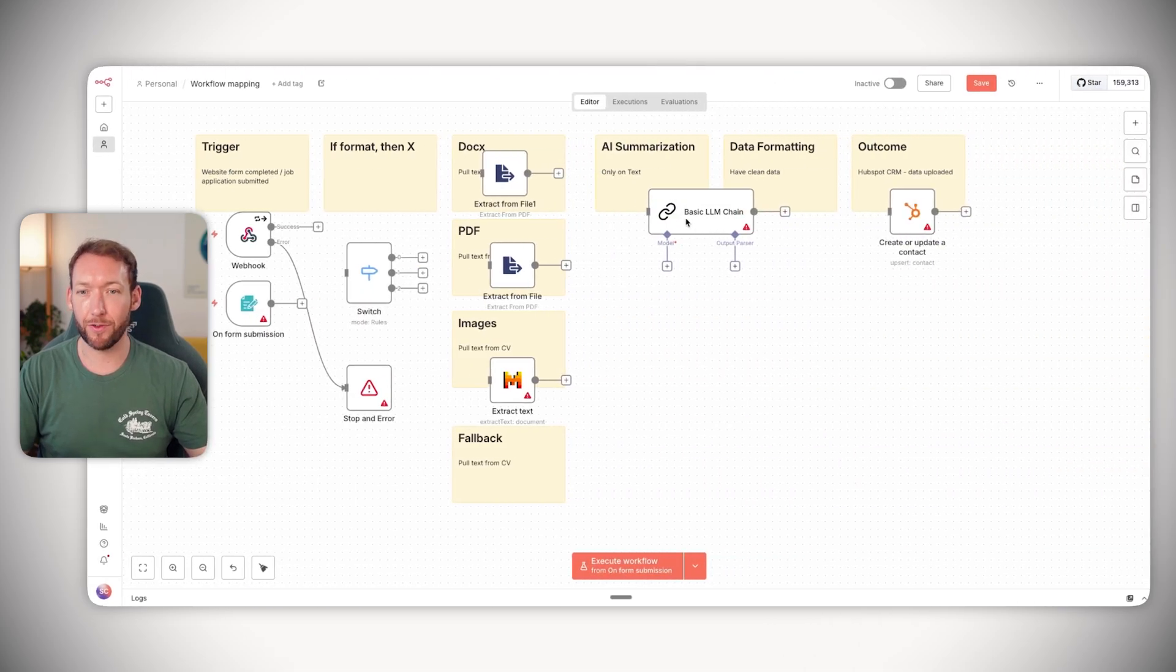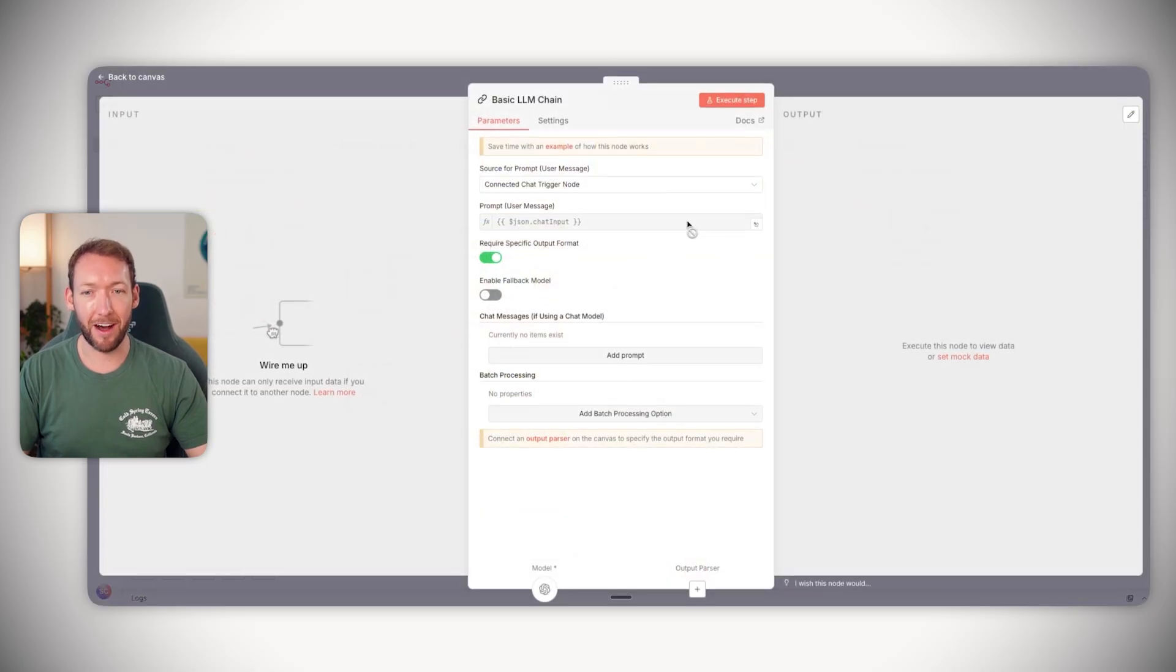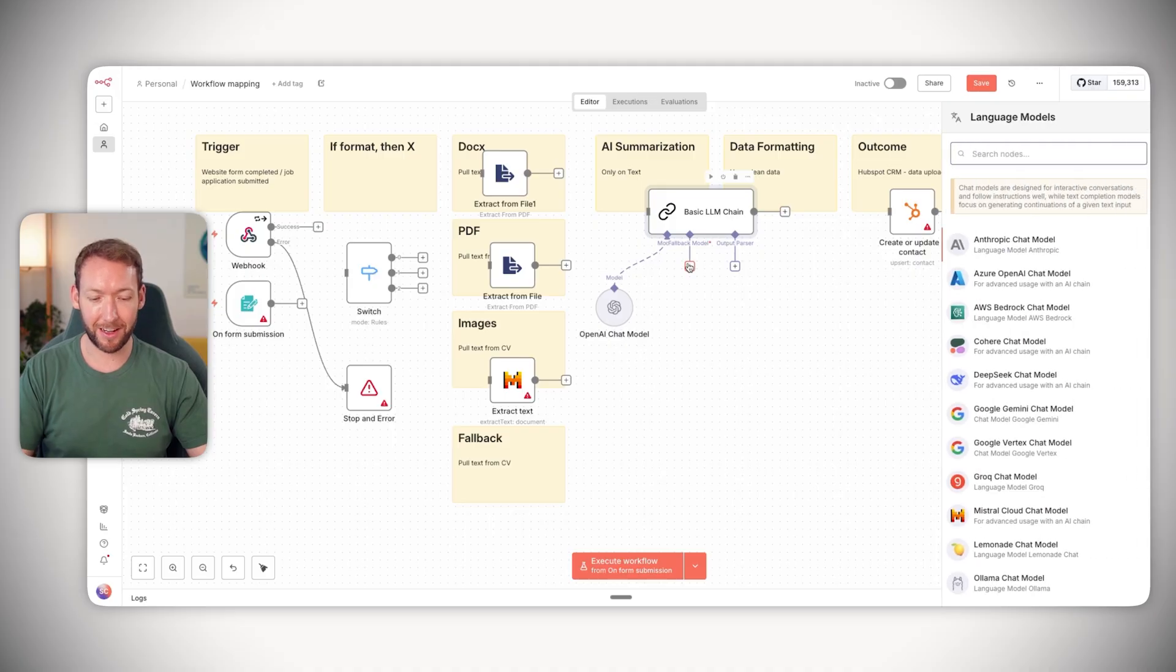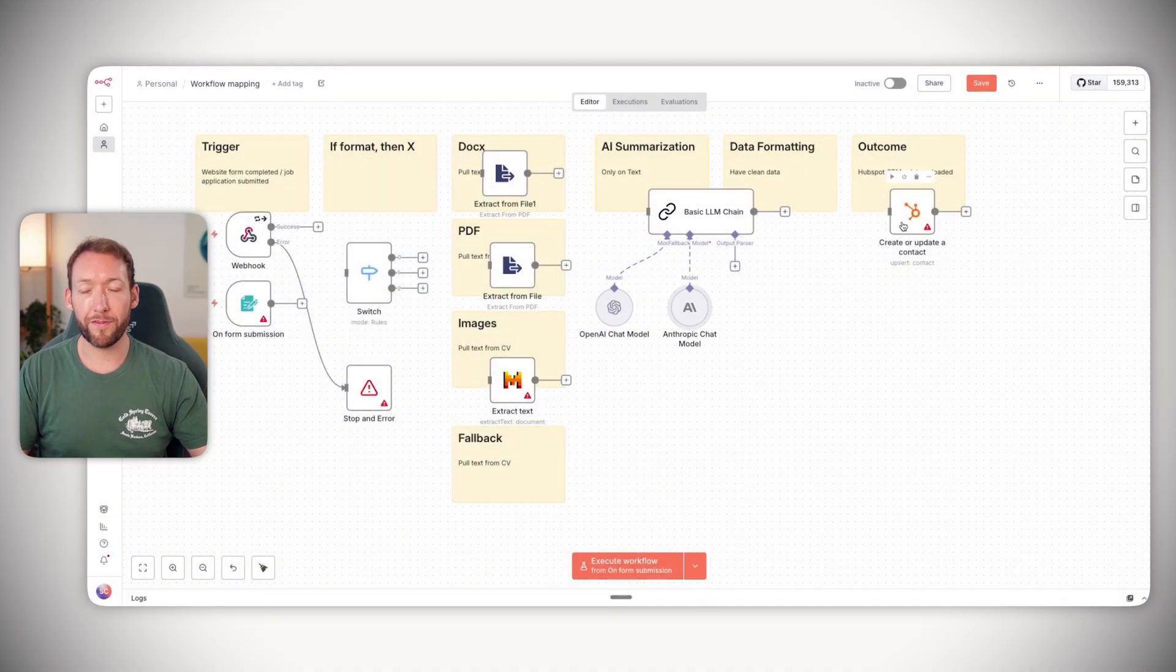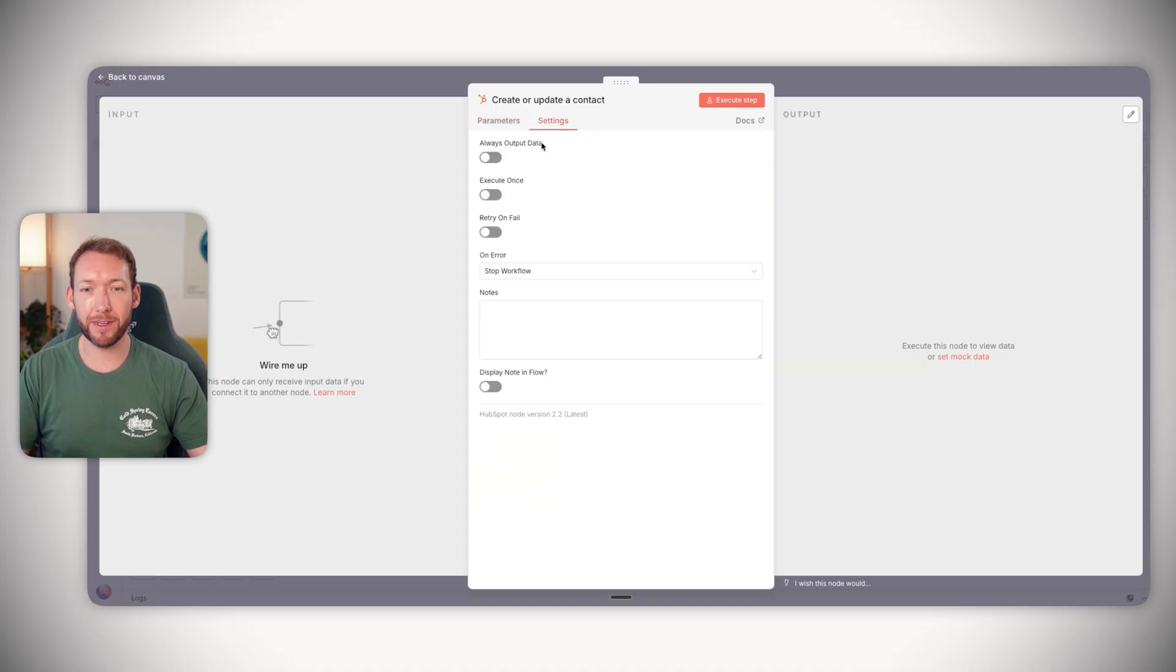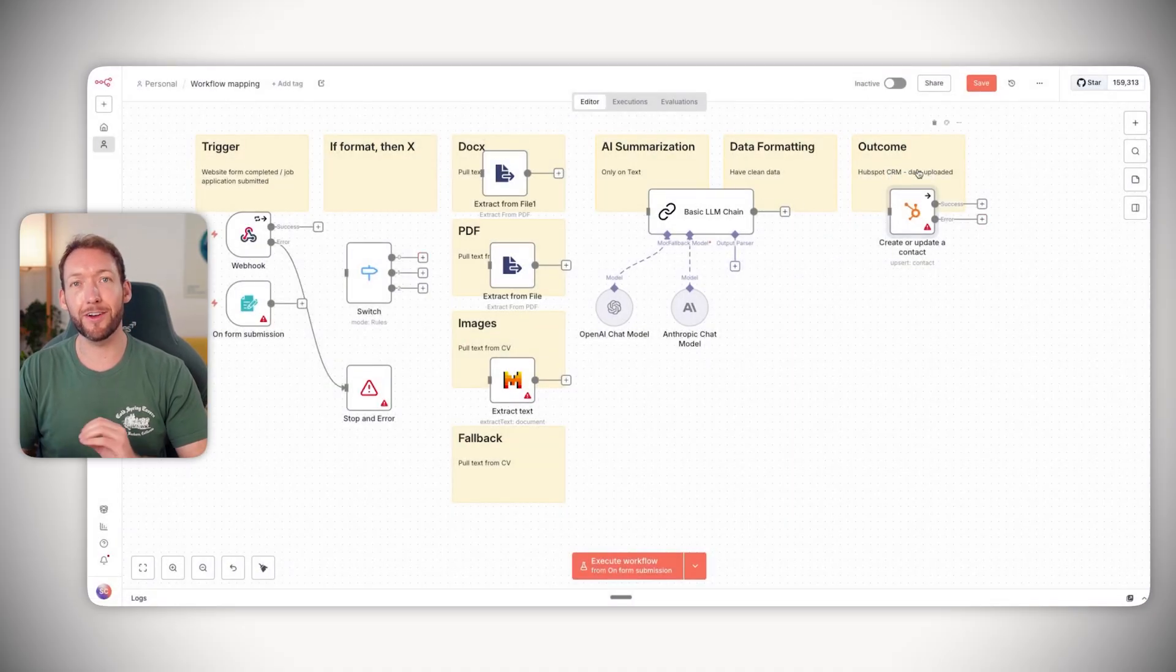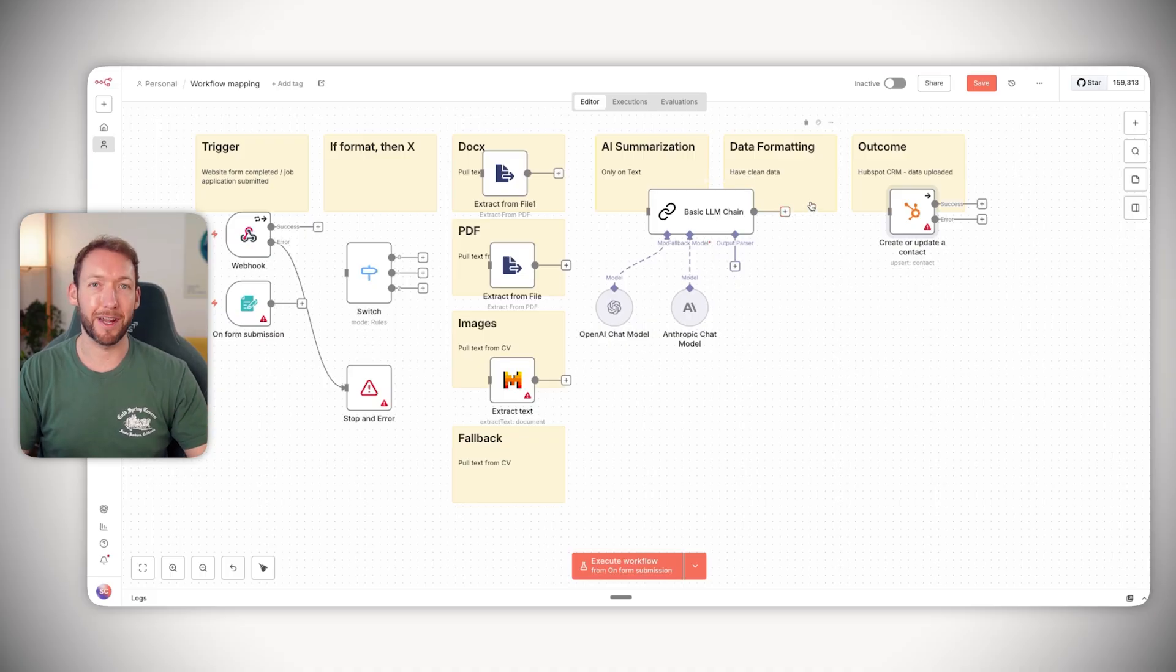And what happens if an external service fails? So say, for example, we have the LLM attached to OpenAI - what happens if that fails? We need to set up edge cases for that, like fallback models. We can actually say instead of OpenAI, we're going to use Anthropic as a fallback. Or if, for example, our HubSpot fails, maybe we need to add in this additional error output that says we've got to the final stage, we've got all the data, but we're not able to actually add it into HubSpot. So send this to the human who's supervising this to actually put that in manually.